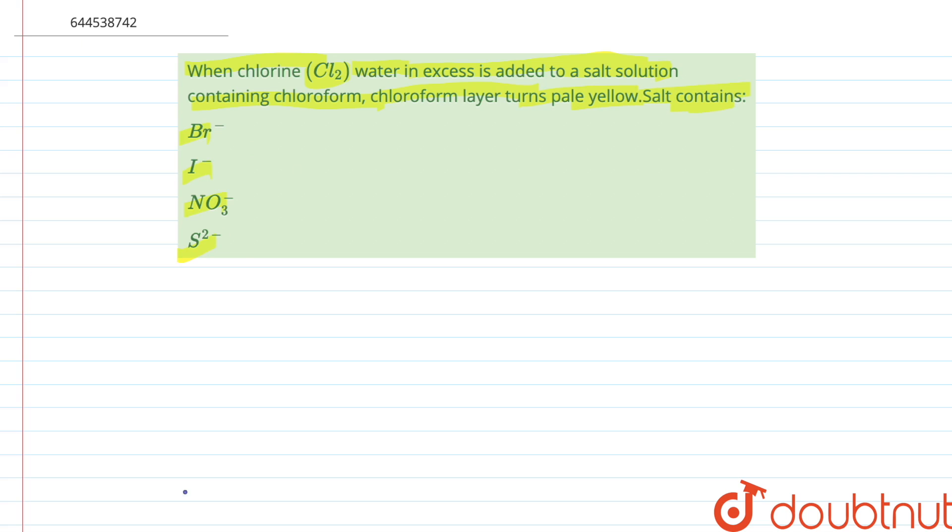So in this question, we have to determine which salt, when it reacts with chlorine water in the presence of CHCl3, that is chloroform, gives a pale yellow layer of chloroform. So basically, the chloroform layer turns pale yellow.